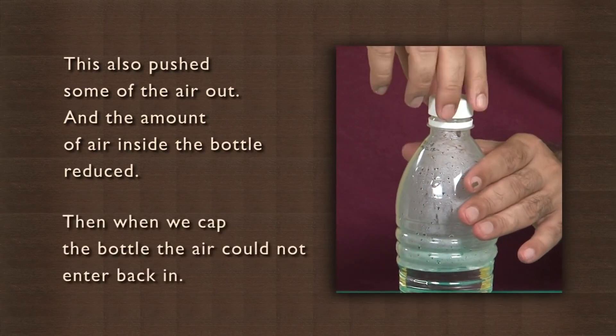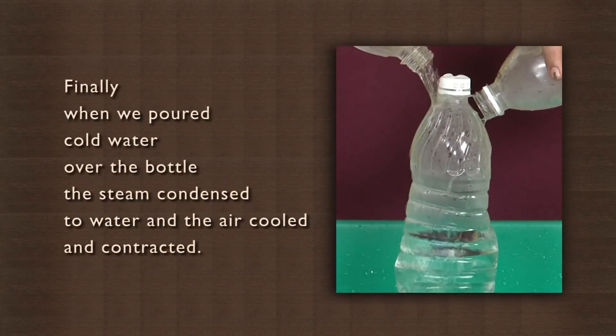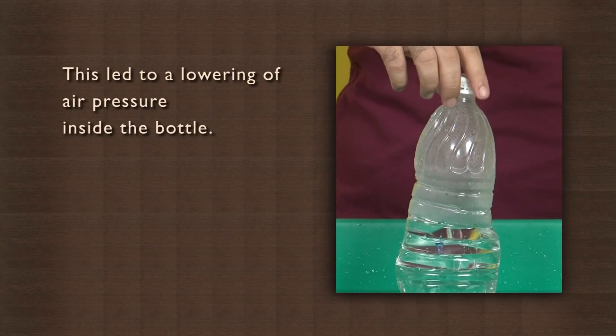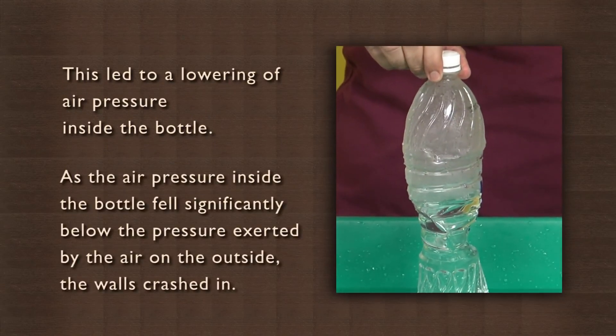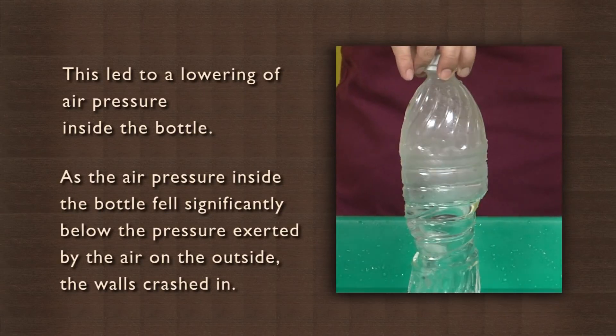When we capped the bottle, the air could not enter back in. Finally, when we poured cold water over the bottle, the steam condensed to water and the air cooled and contracted. This led to lowering of air pressure inside the bottle. As the air pressure inside fell significantly below the pressure exerted by air on the outside, the walls crashed in. Air in the pneumatic tires of bicycles or cars exerts pressure on the walls of the tires from inside, introducing a cushioning effect that absorbs shocks from rough roads.